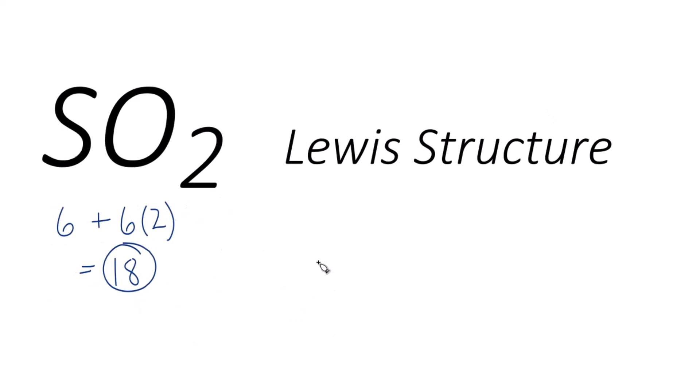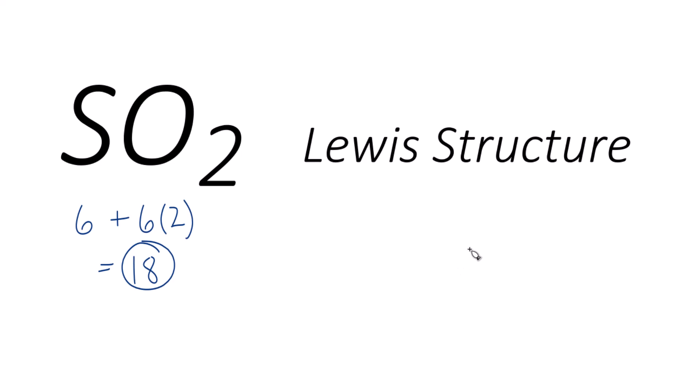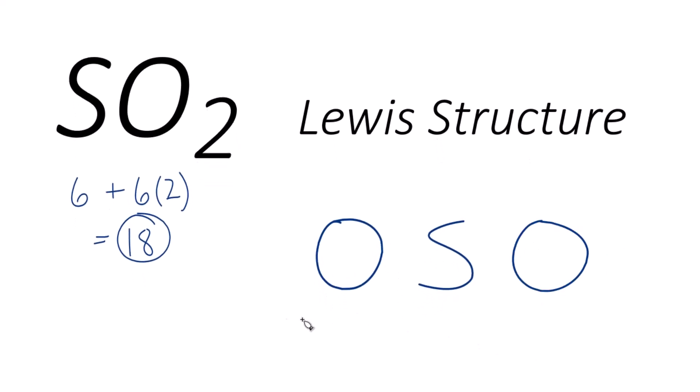So when we draw Lewis structures, we put the least electronegative in the center. That's the sulfur. We'll put oxygen atoms on either side. So remember, we have 18 valence electrons for our Lewis structure here. Let's form bonds between atoms. We'll put a pair of electrons here and here. So now we've used four. We have 18 totals. We have 14 more left.